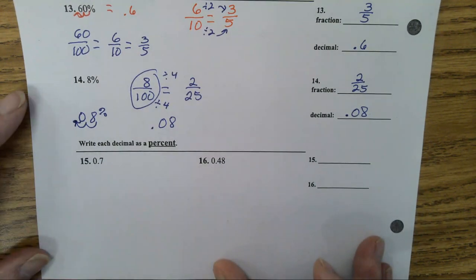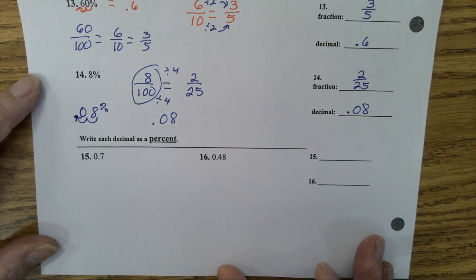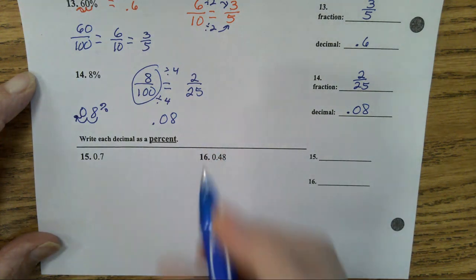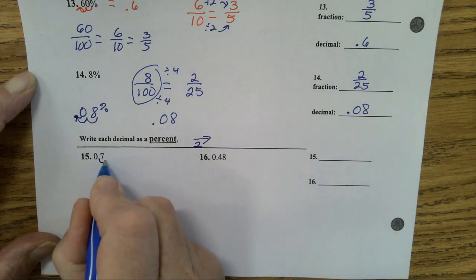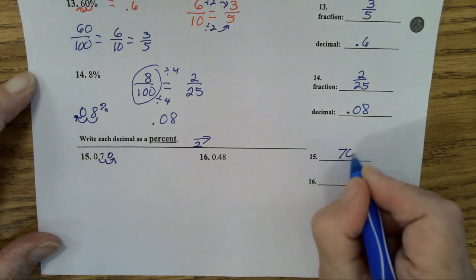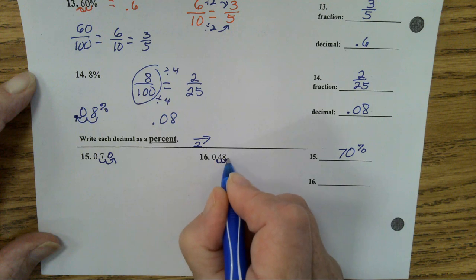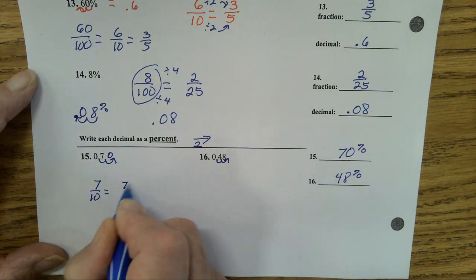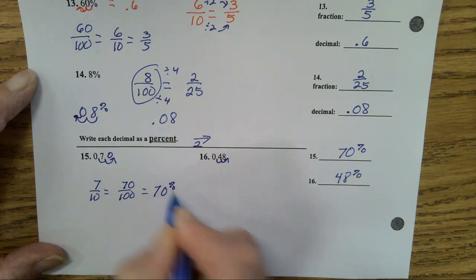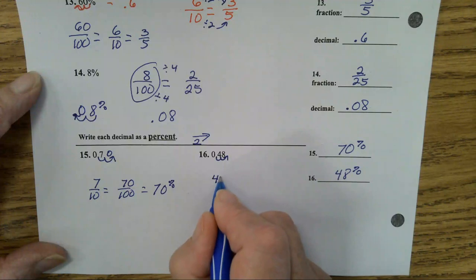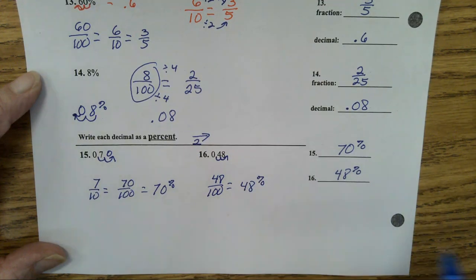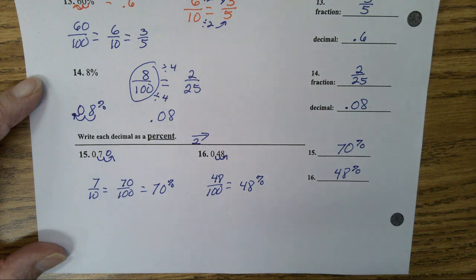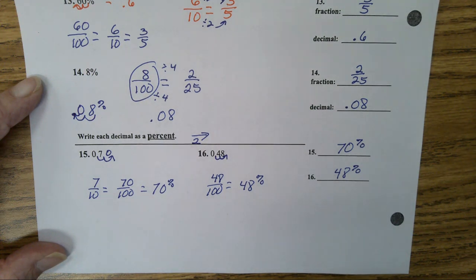All right. Let's look at our last two for our notes. Write each decimal as a percent. Okay. That is easy. Here, we are going to move it two places. To the right, two to the right, one, two, put a zero on your empty loopy, 70%. One, two, 48%. And just remember, seven tenths would equal 70 over a hundred, and whatever's over a hundred is your percent. Or if you don't remember to do it this way, 48 hundredths equals 48%. Any questions? Okay. Then, I have a worksheet for us to work on for your classwork. If you don't get it finished in class, it will be homework. And, I will give you back your quizzes from Thursday.